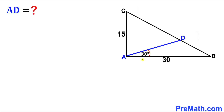In this video we have got a right triangle ABC such that its side lengths are 30 and 15 units. Moreover, this line segment AD makes an angle of 30 degrees with side length AB, and now we are going to calculate this distance AD.